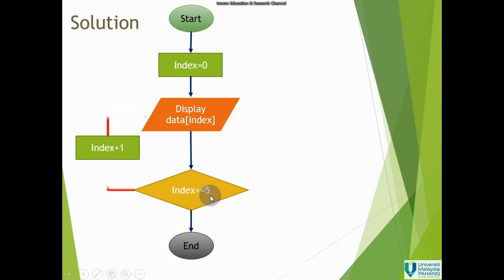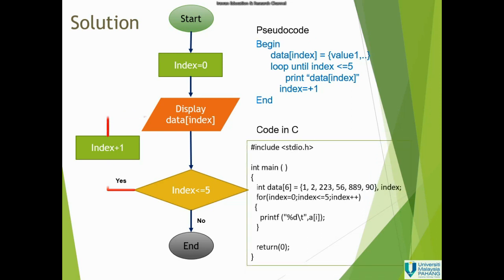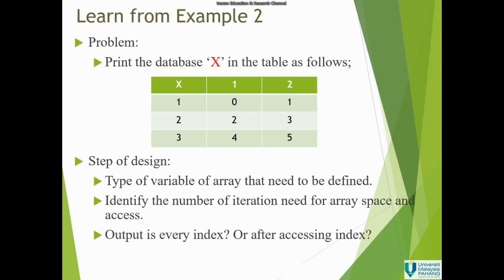I can now give the pseudocode and the code in C for this example. We only use one for-loop to access the array named 'data' with a size of six and the content as given.